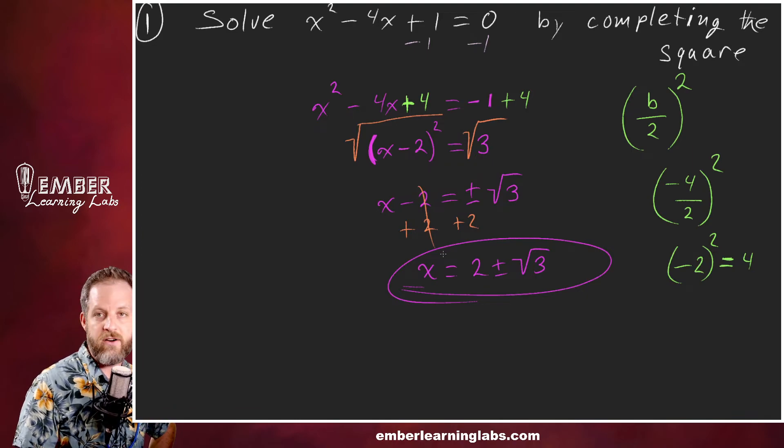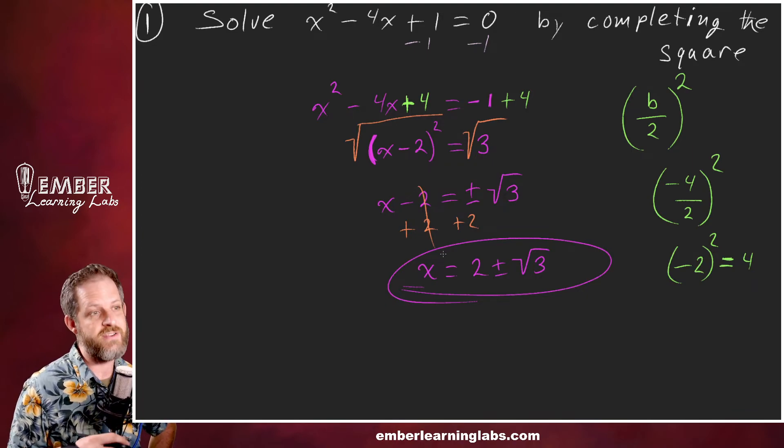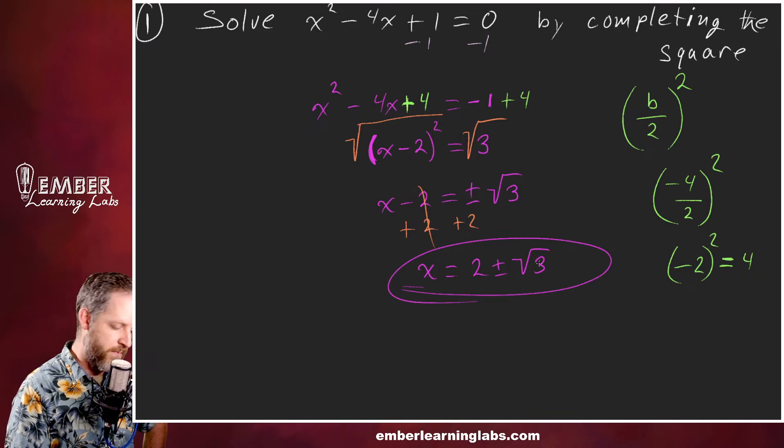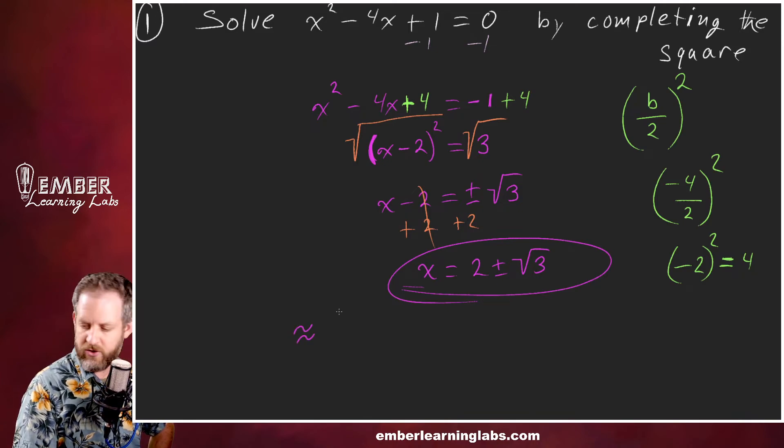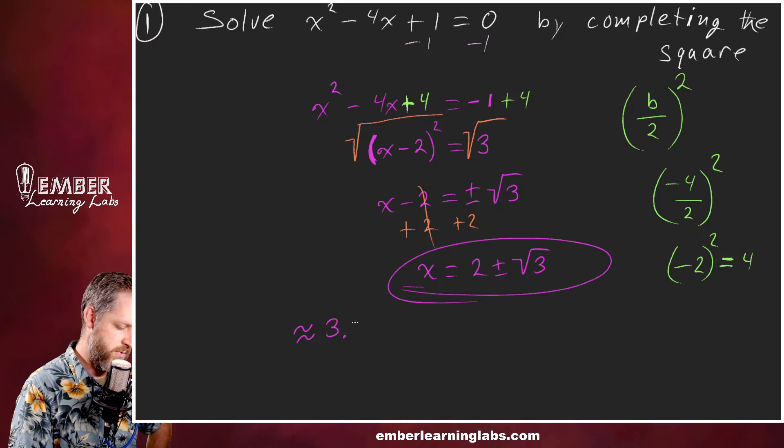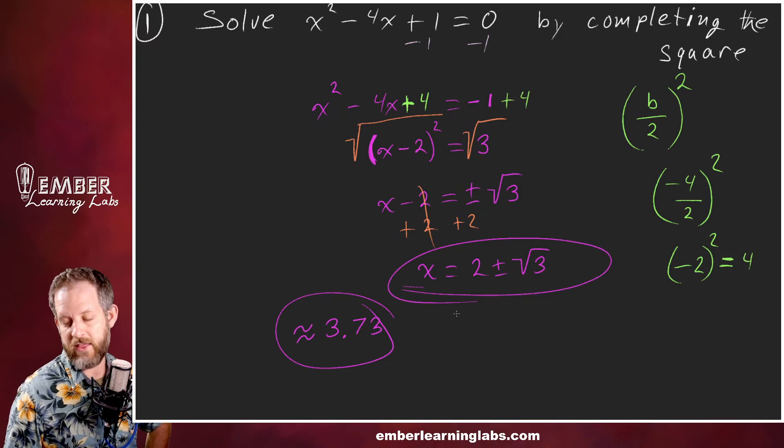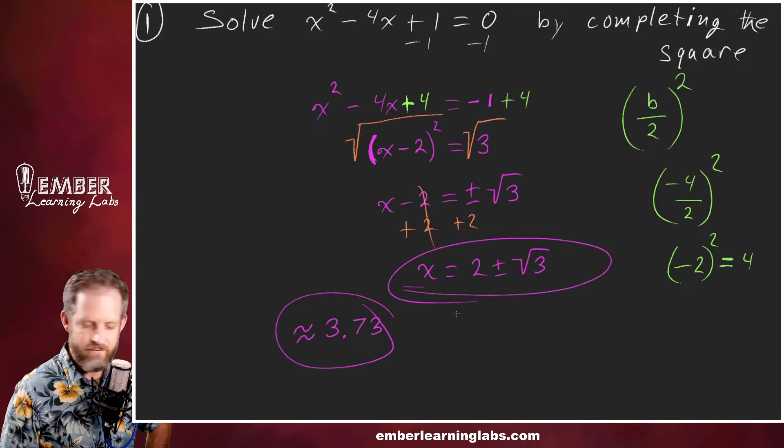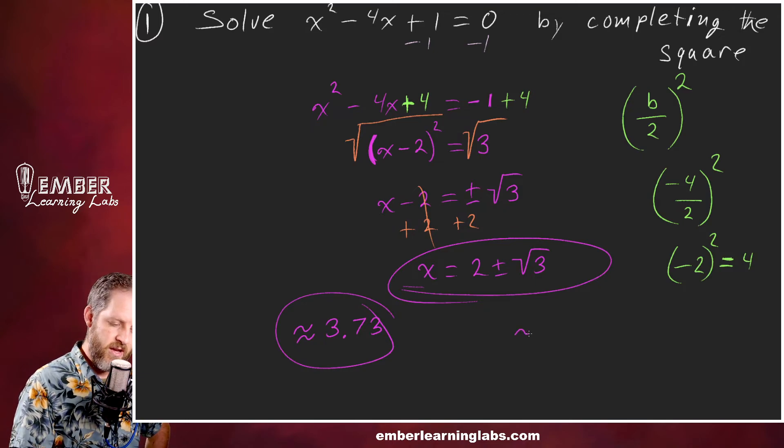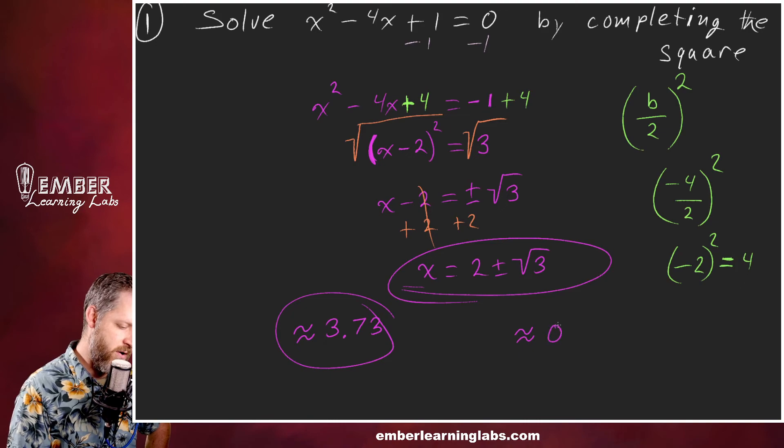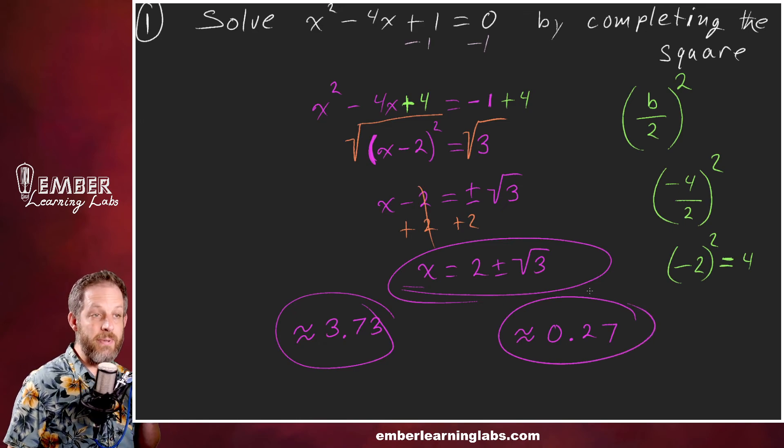Now if we wanted to get the decimal equivalent, we would plug this into our calculator. You'd do 2 plus the square root of 3 and you would end up with approximately 3.73 as one of the two answers. Remember that quadratics give us two answers. And if we do 2 minus the square root of 3, we end up with approximately 0.27.